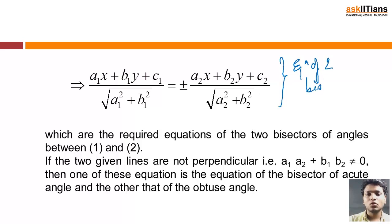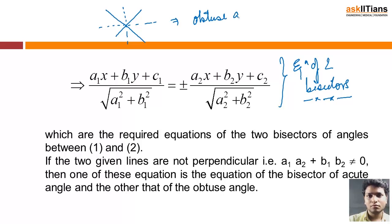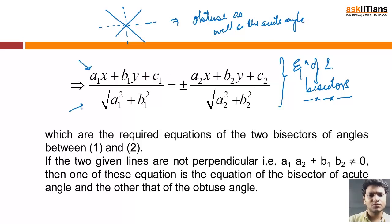Moving further, since we know these are two lines with two bisectors, we will always face confusion between the obtuse and acute angle bisectors. By looking at the equation alone we cannot tell which one is the acute angle bisector and which one is the obtuse angle bisector.